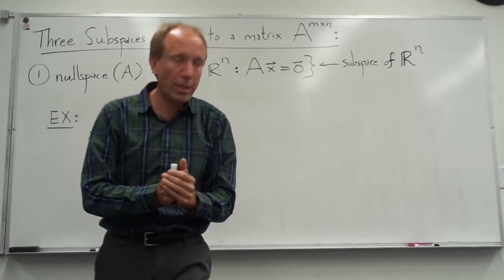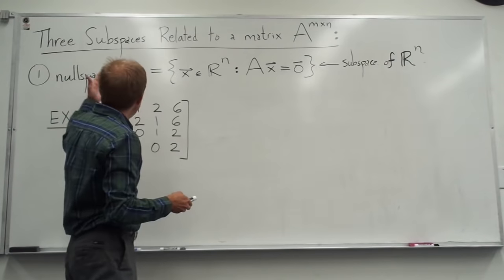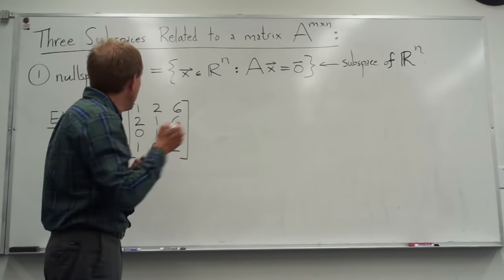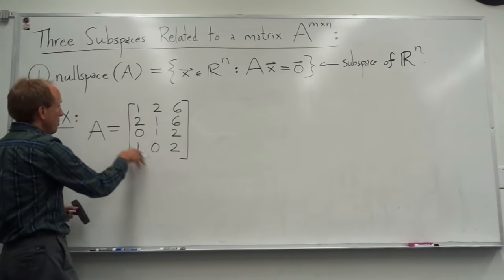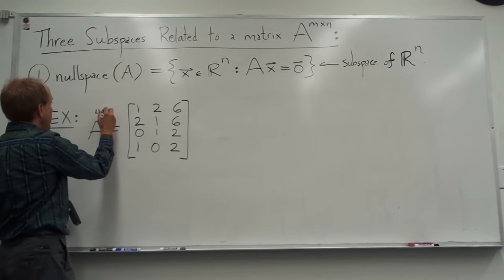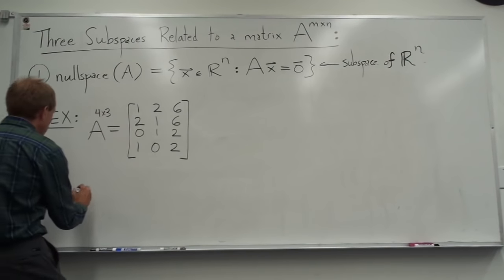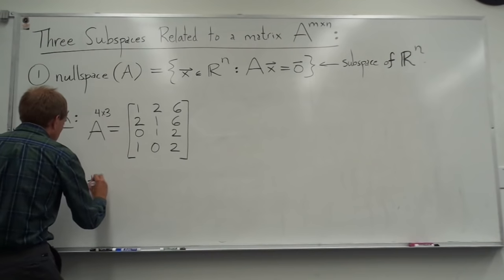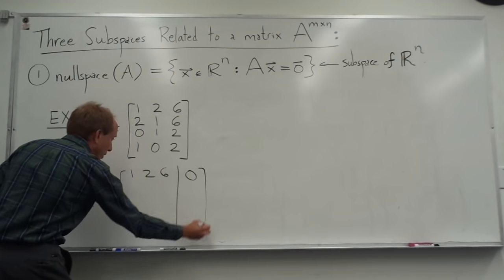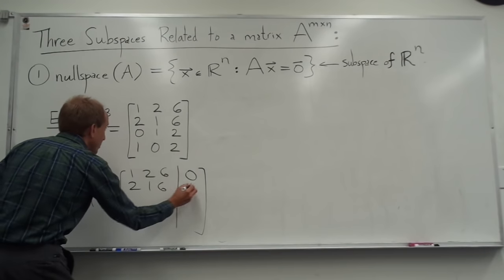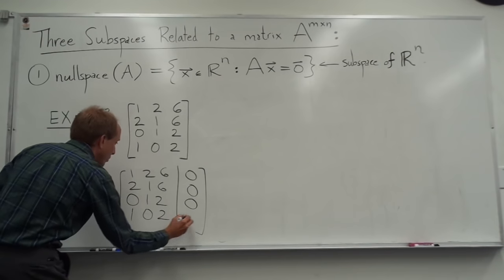This is the key equation. We've seen this before. The way you find the null space of a matrix is you take the matrix and augment it. So let's say I take this 4 by 3 matrix — what you do is augment it with a column of zeros. Very simple idea. We've done this before; I'm just reviewing it here.